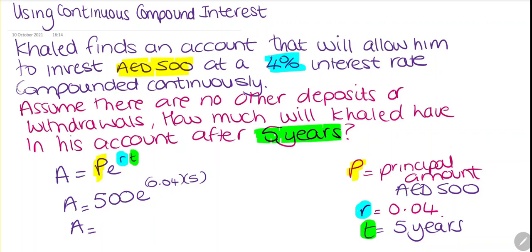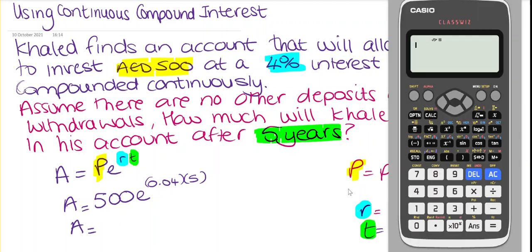If you put this into the calculator, we have 500. The E key is accessed using shift and LN, which takes us to E to the power. Then we enter 0.04 — we can put this in brackets or use the multiply — times five.